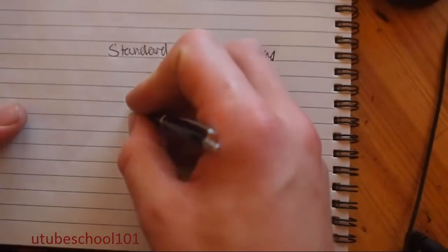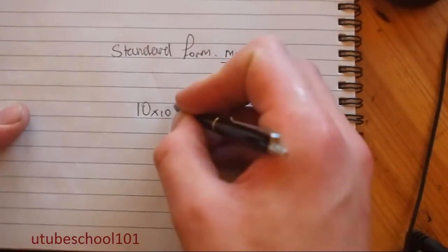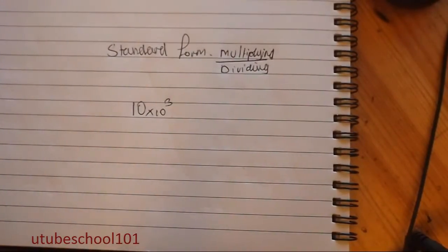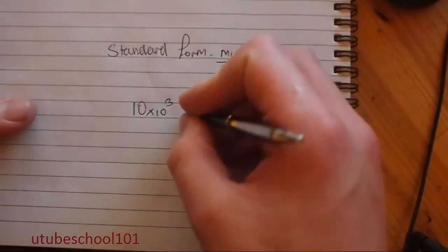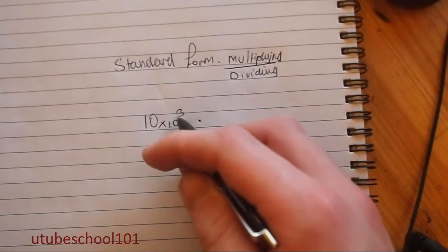So standard form, if you weren't aware, is written like this. It essentially just specifies how many zeros are on the end of a number. On a number here,